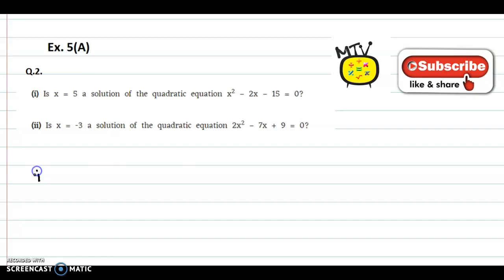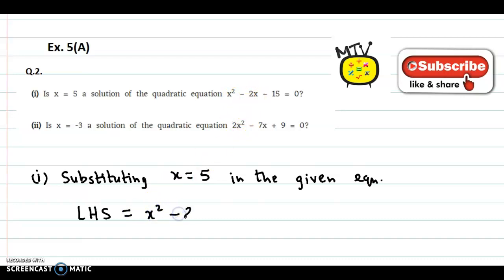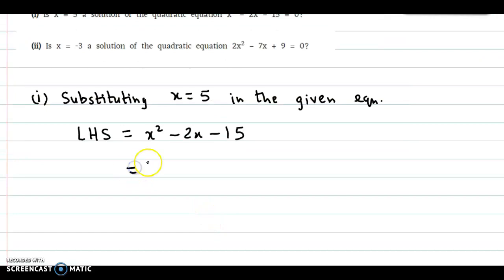For the first one, let us substitute x equal to 5 in the equation and see whether it satisfies the equation or not. Substituting x equal to 5 in the given equation — let us substitute into x squared minus 2x minus 15. We substitute x equal to 5, so we have 5 squared minus 2 into 5 minus 15.